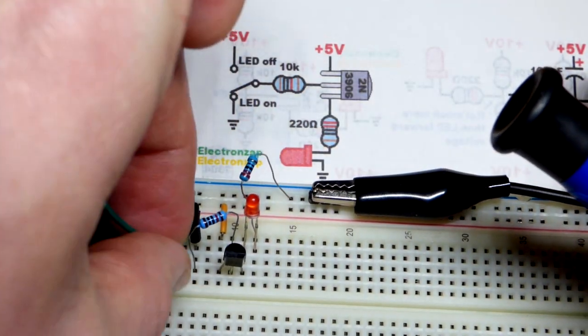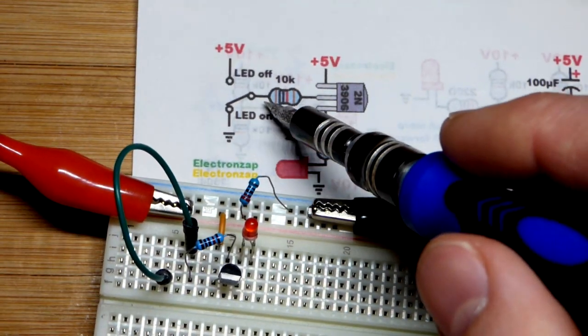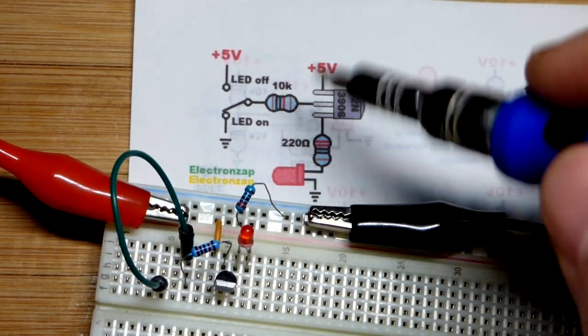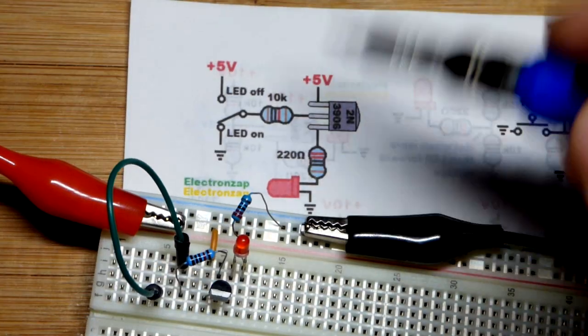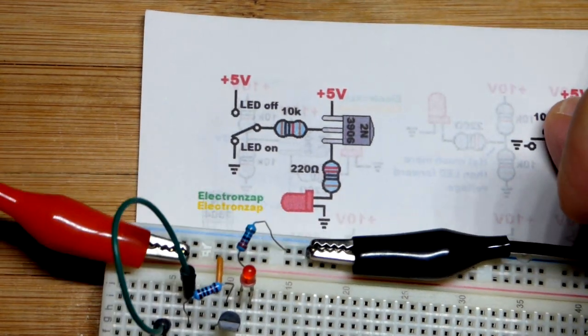So we get a little bit of emitter to base current. We regulate it with the 10K resistor right there. That allows many times the current to flow from emitter to collector, over 100 times right there. The load will actually limit the current.